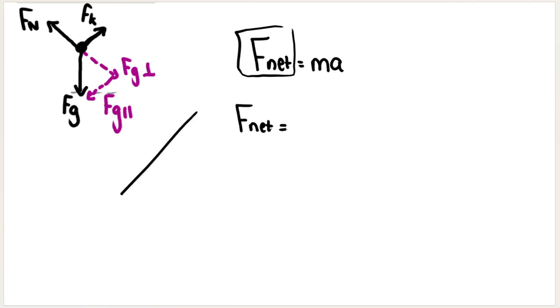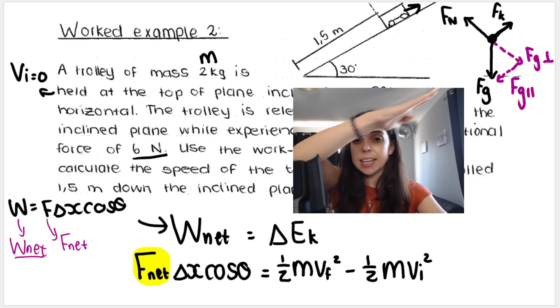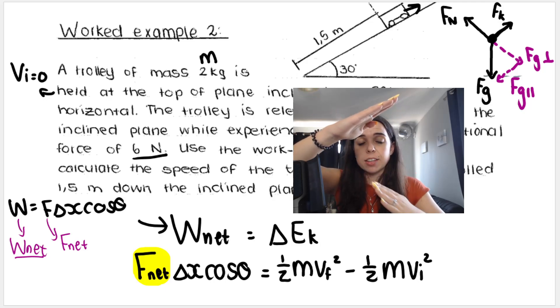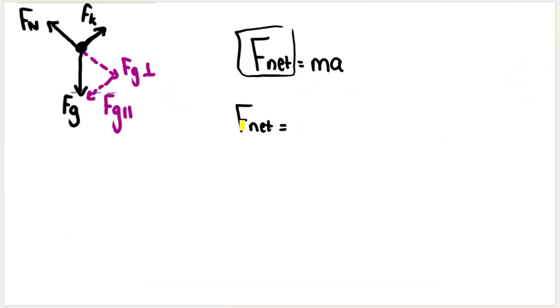In this case, the net force of the object is acting in the parallel direction, parallel to the slope, down the slope. In other words, if we look at our picture, our net force is acting in this direction. It is not acting in the perpendicular direction like this. So the object doesn't move in this direction, it moves down.